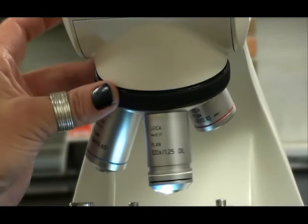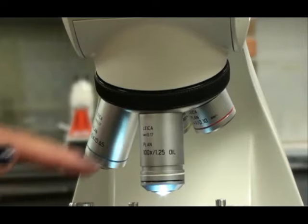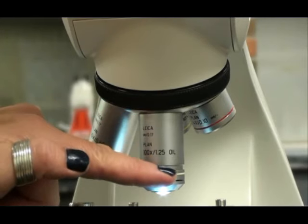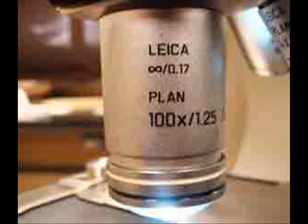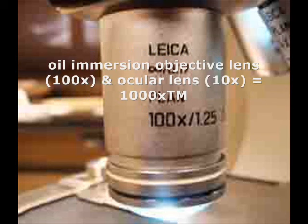Compound microscopes typically have three or four objective lenses. If you do have a fourth lens, that would be the oil immersion lens. It has a black and white band around it. It magnifies objects 100 times actual size. So together with that ocular lens of 10 times magnification, I can get a total magnification with oil immersion of 1000.